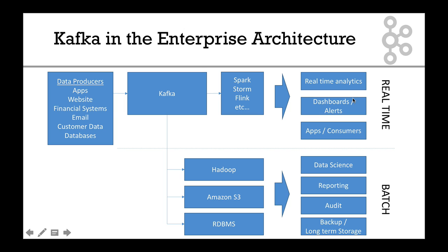Then there's the second pipeline — the batch pipeline — in which all data from Kafka is pushed to a data lake, whether that's Hadoop, Amazon S3, or even an RDBMS technology.